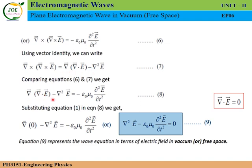Setting the left-hand side equal: del of del dot E minus del-squared E equals minus epsilon-zero mu-zero dou-squared E by dou t-squared. This is equation number 8. Now, substituting the first Maxwell equation, del dot E equals zero, we get del of del dot E equals zero.